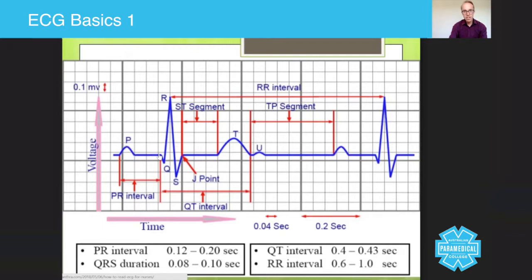Every time you see a dip, this thing here is called a baseline or the isoelectric line. Every time you see a movement away from it, anything that goes above the isoelectric line is a positive waveform. Anything below it is a negative waveform. So the bigger this positive deflection is, the more voltage there is. So the bigger the P wave is, for example, the more energy there is in that P wave.